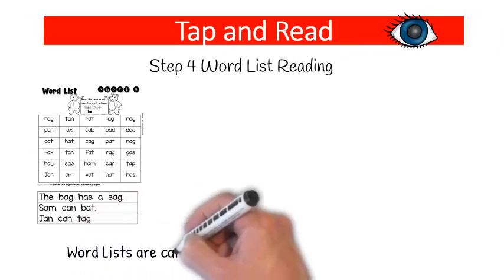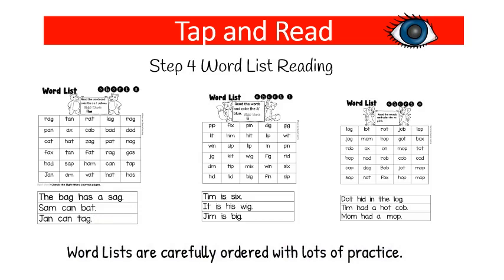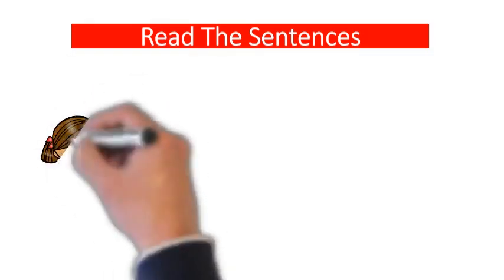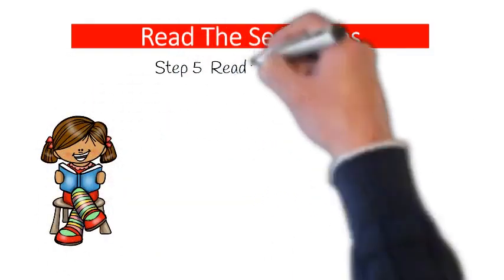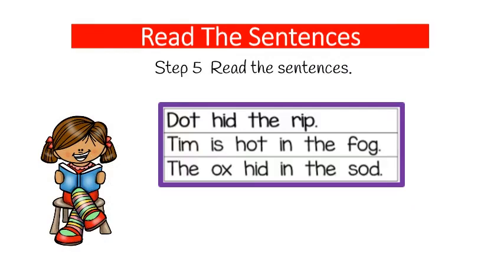The next step is called Tap and Read. You will use this step to build fluency for your students. The word lists are carefully ordered, so use them in the order in which they occur in your packet, so that you don't cover things your student hasn't learned yet. It may not be necessary for your student to do every list, but if they start to struggle, make sure you've given them enough practice before moving on. Each word list has sentences at the bottom which you'll read with your students.